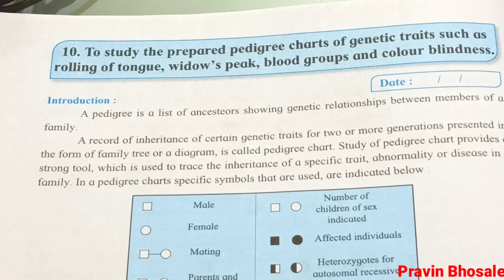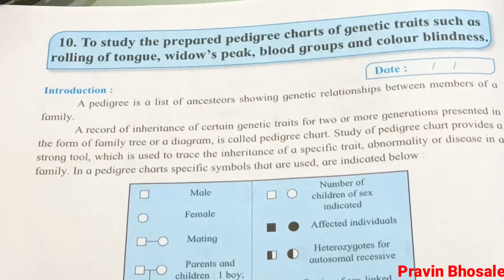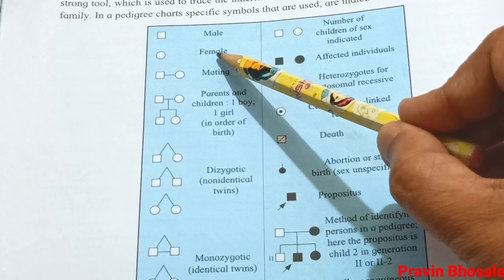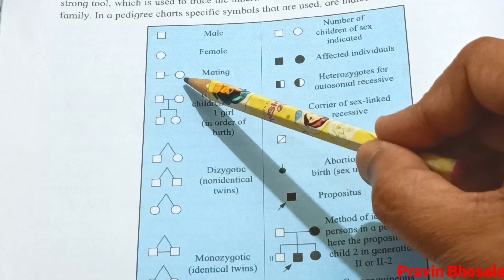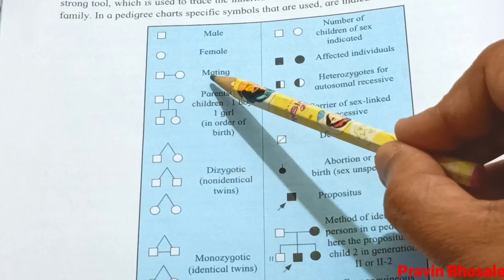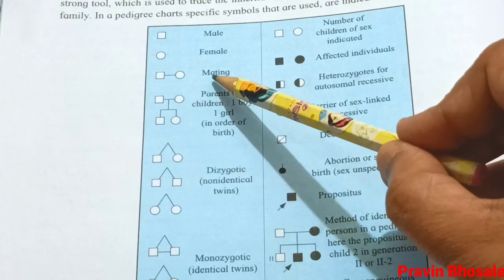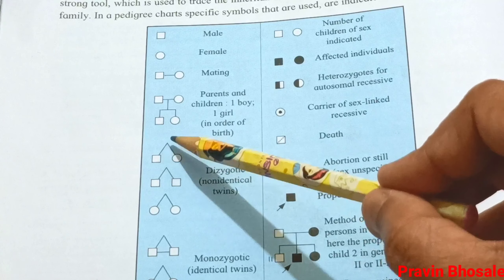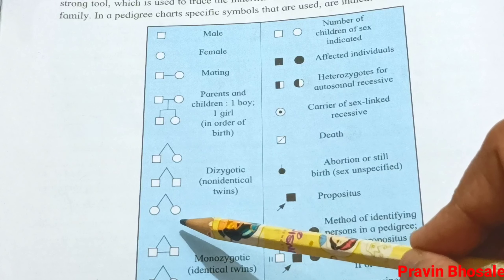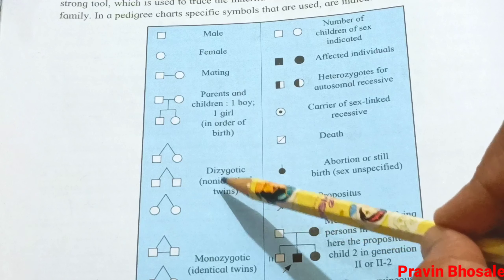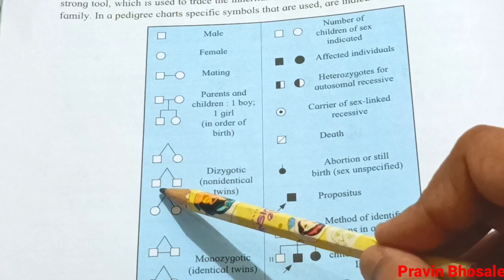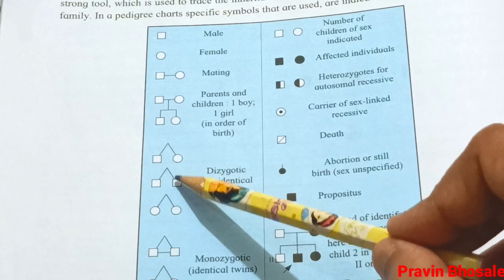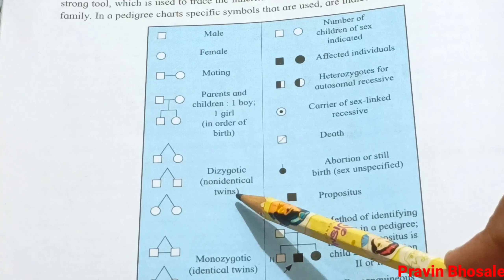To study pedigree we should know the symbols. The square represents male, circle represents female. Then square and circle with a horizontal line in between represents parents and children. The symbol for dizygotic, that is non-identical twins — they can be boy and girl, boy and boy, or girl and girl.